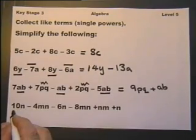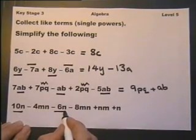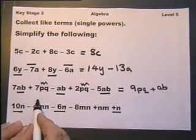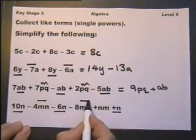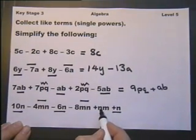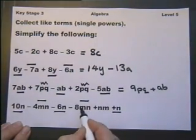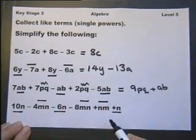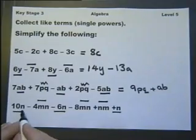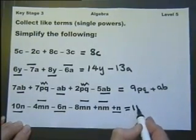Now, what have we got here? We've got N, N, N. They're Like Terms. We've got MN. We've got MN. Here we've got NM. Well, actually, it doesn't matter when it's round the other way. So, let's do the Ns first. We've got 10N plus another 1 there, which will give us 11N.